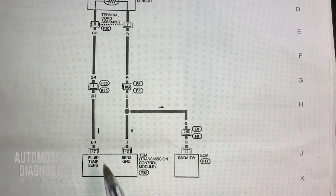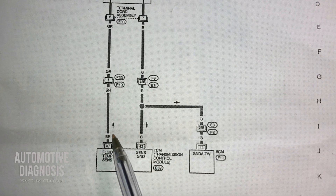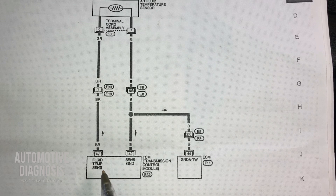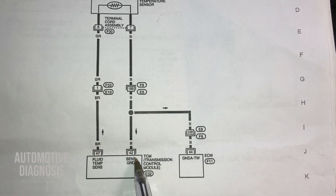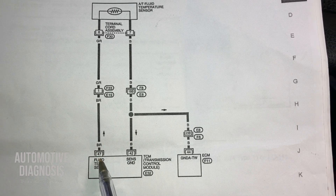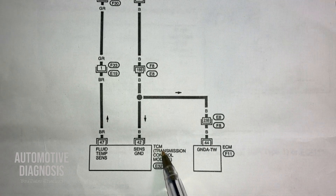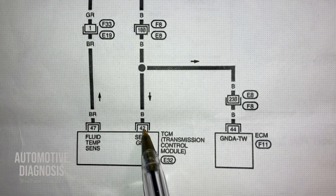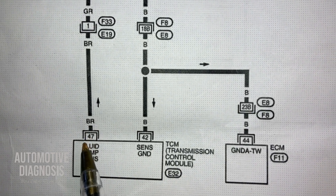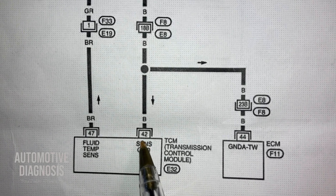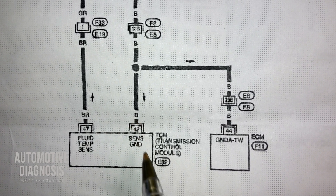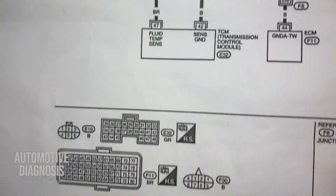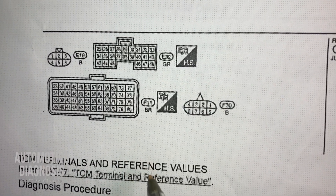I have these two wires connected from the sensor to the TCM, and one of them is ground. I can check the voltage here to read the sensor output voltage with a multimeter in case I don't have a scan tool. For measuring resistance I can disconnect the connector on the TCM and measure resistance between these two pins, because that measurement will be the sensor resistance. On the TCM itself, the pin numbers are pin 47 and pin 42.